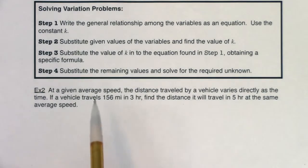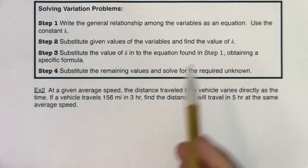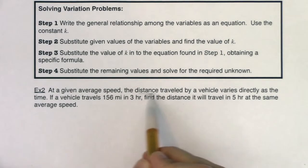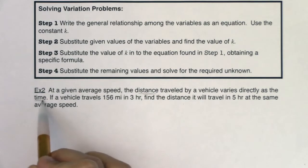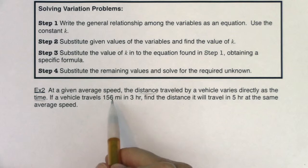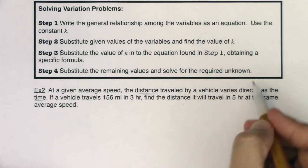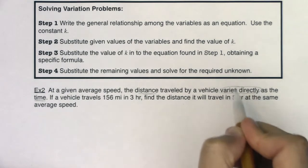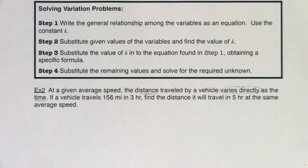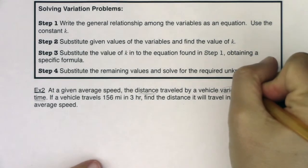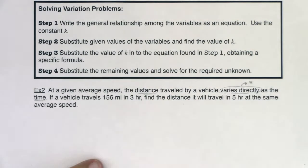So if I hear what's varying in this problem, I hear we have distance as a variable and time as a variable, and if I look at the units that were given to me I can see that as well. You see 156 miles which is a distance and I see three hours which is a time. This is another buzzword phrase: varies directly. As soon as I hear varies directly, I know I'm going to be using multiplication when I go to write my general variation equation.